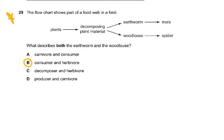Question 29: The flowchart shows part of a food web in a field — plants, decomposing plant matter, earthworms, moles, woodlice, and spiders. What describes both the earthworm and the woodlouse? They were both primary consumers eating the plant matter, and they were both herbivores.